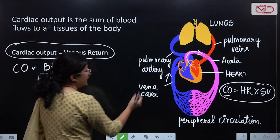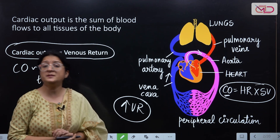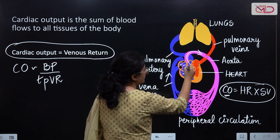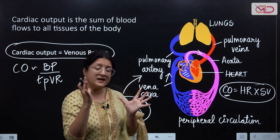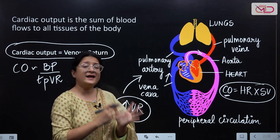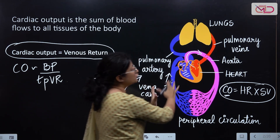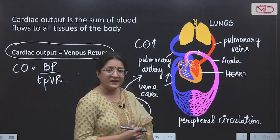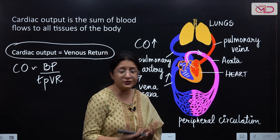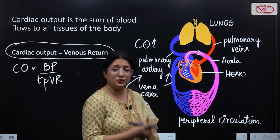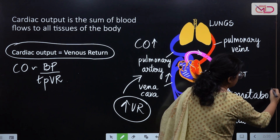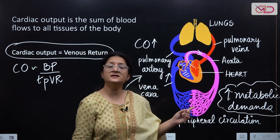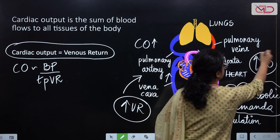If venous return to the heart is increasing by any means, that increased venous return raises pressure on the right side of the heart — right-sided filling pressures increase — causing a mechanical stretch of the heart muscles. As a result, the heart receives more blood and needs to pump more blood forward. So with increasing venous return, cardiac output also increases. Similarly, when tissues have increased metabolic demands, the cardiac output needs to increase to meet those demands at the tissue level.